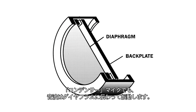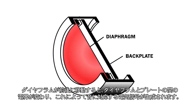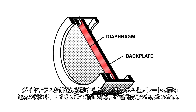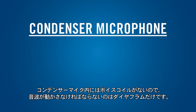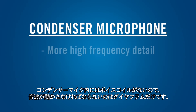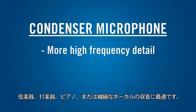In a condenser microphone, sound waves also strike a diaphragm and cause it to vibrate. The diaphragm is mounted just in front of an electrically charged plate. As the diaphragm moves back and forth, it changes the electric field between the diaphragm and plate, which generates an electrical signal that corresponds to the sound. Since there is no voice coil in a condenser mic, the sound waves only have to move the diaphragm. This gives condenser mics better high-frequency detail than dynamics, making them ideal for micing stringed instruments, percussion, piano, or subtle vocals.